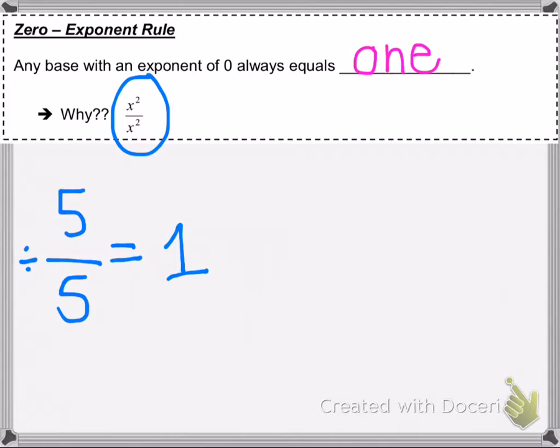Well, isn't that what this is saying? If you have x to the second power divided by x to the second power, it should equal one. Now, if we write it out, it looks like this.